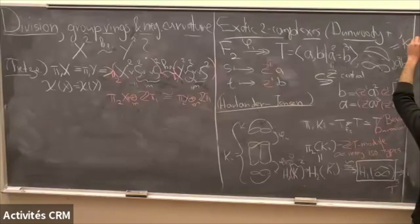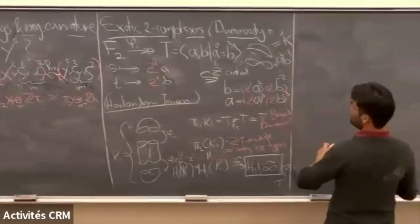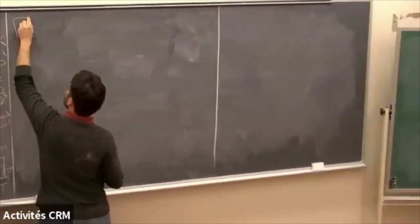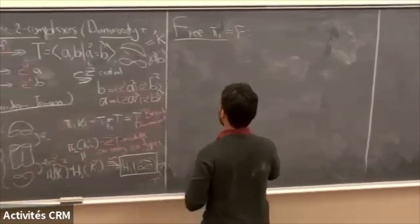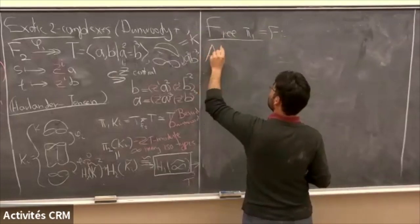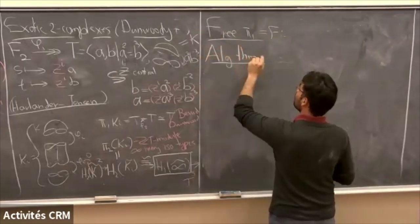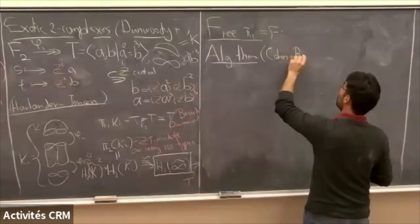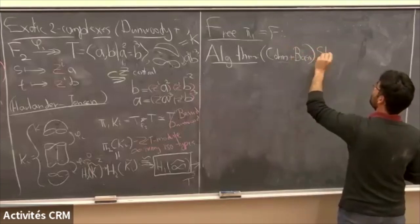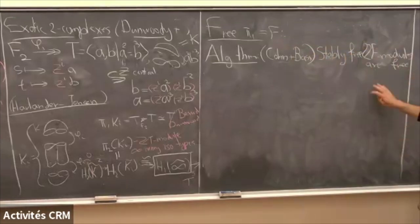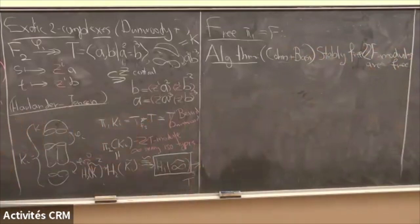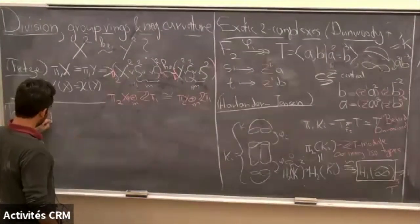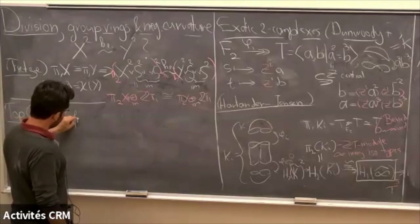Here is the situation in which the algebraic question has a nice answer: when we have a free group. There's an algebraic theorem, mostly due to Cohn, that says stably free Z[F]-modules are actually free. And the topological consequence is: if the fundamental group of your two-complex is free, then the two-complex is standard — that is, X² is homotopy equivalent to a wedge of S¹'s and S²'s, the most obvious type of two-complex.